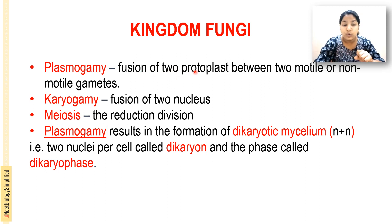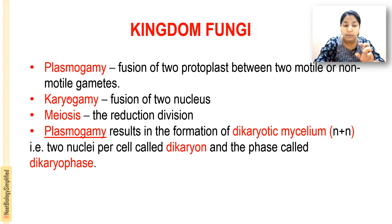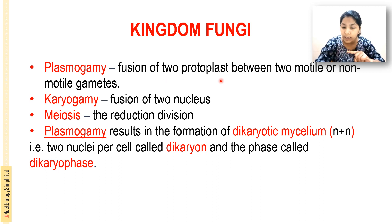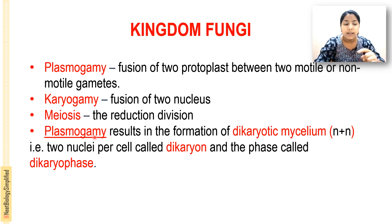Karyogamy: karyo means nucleus, so karyogamy is the fusion of two nuclei. Meiosis is a reduction division. In the case of plasmogamy, fusion of two protoplasts between two motile or non-motile gametes results in a dikaryotic mycelium (n + n). Karyogamy is the fusion of two nuclei; meiosis is a reduction division.